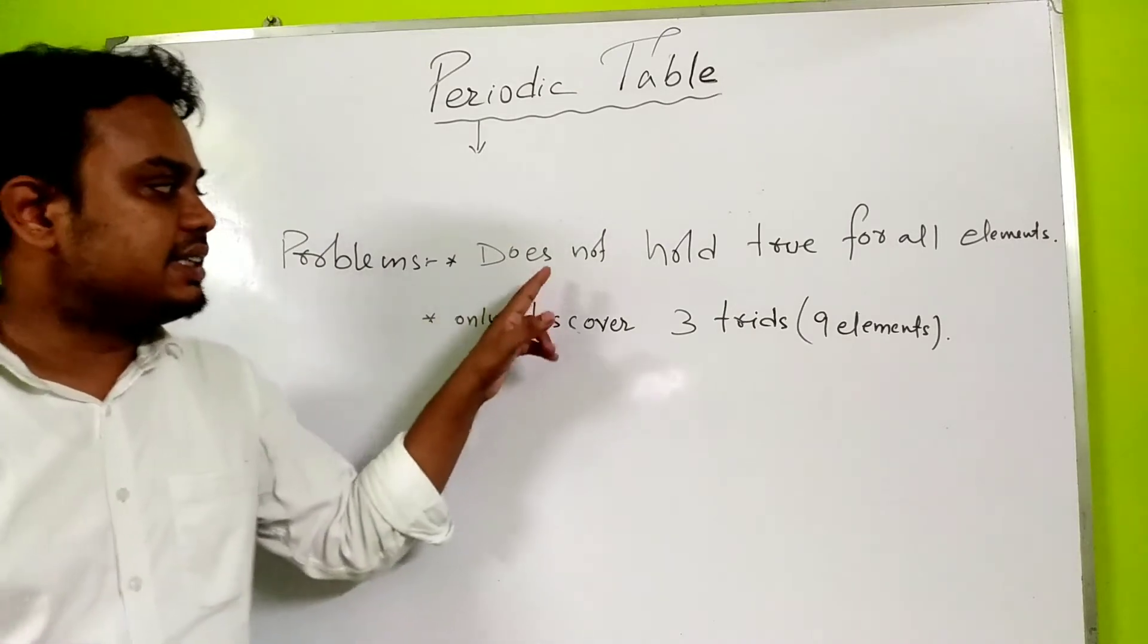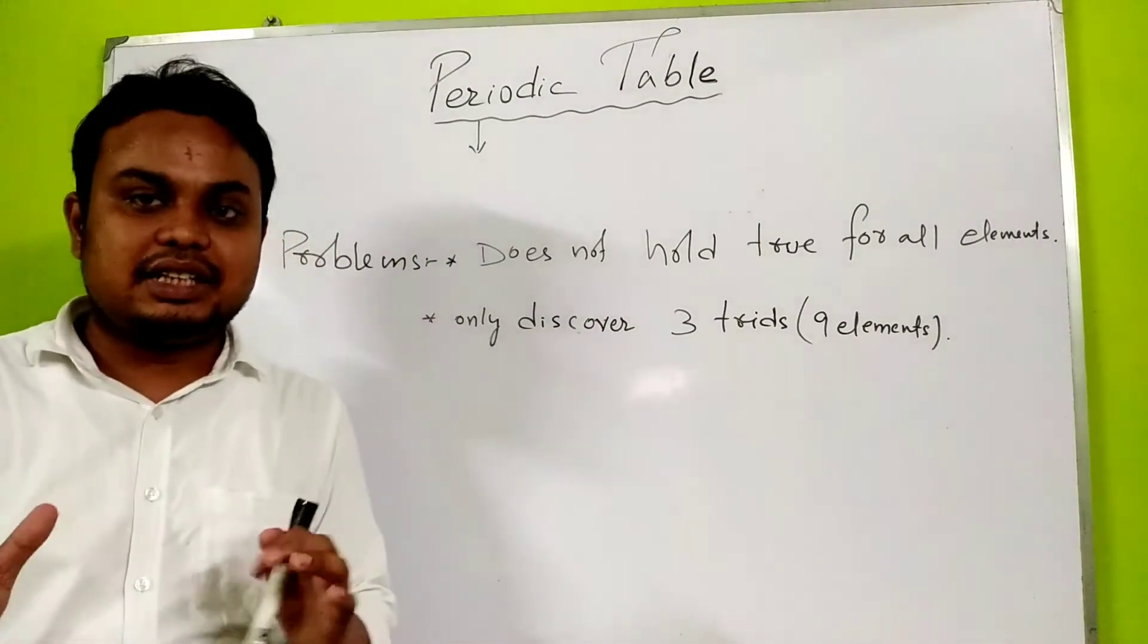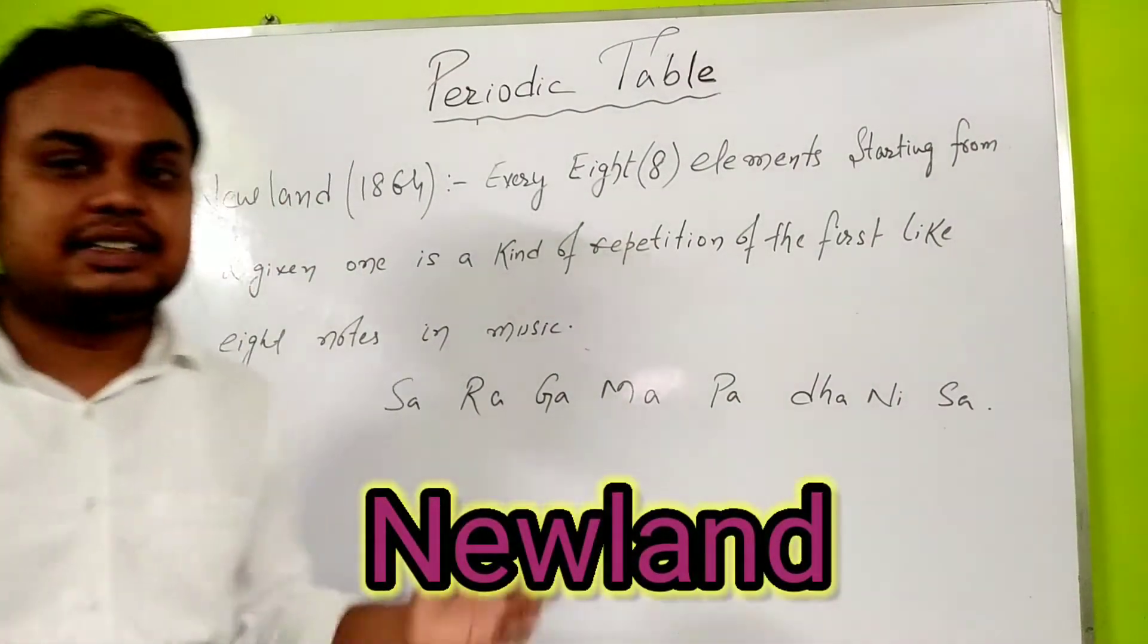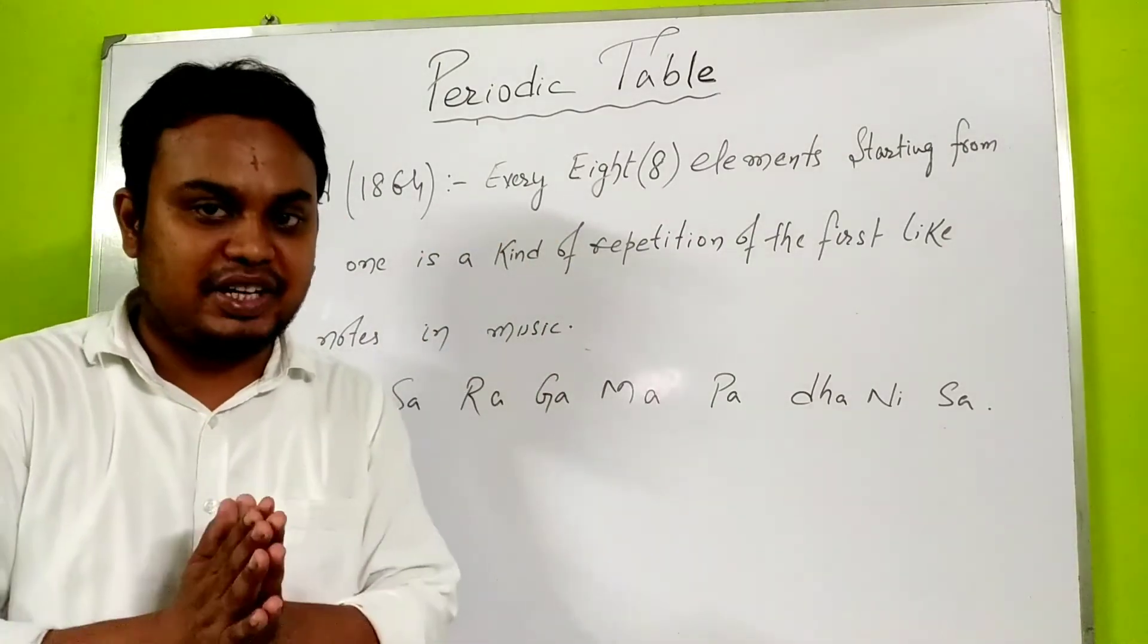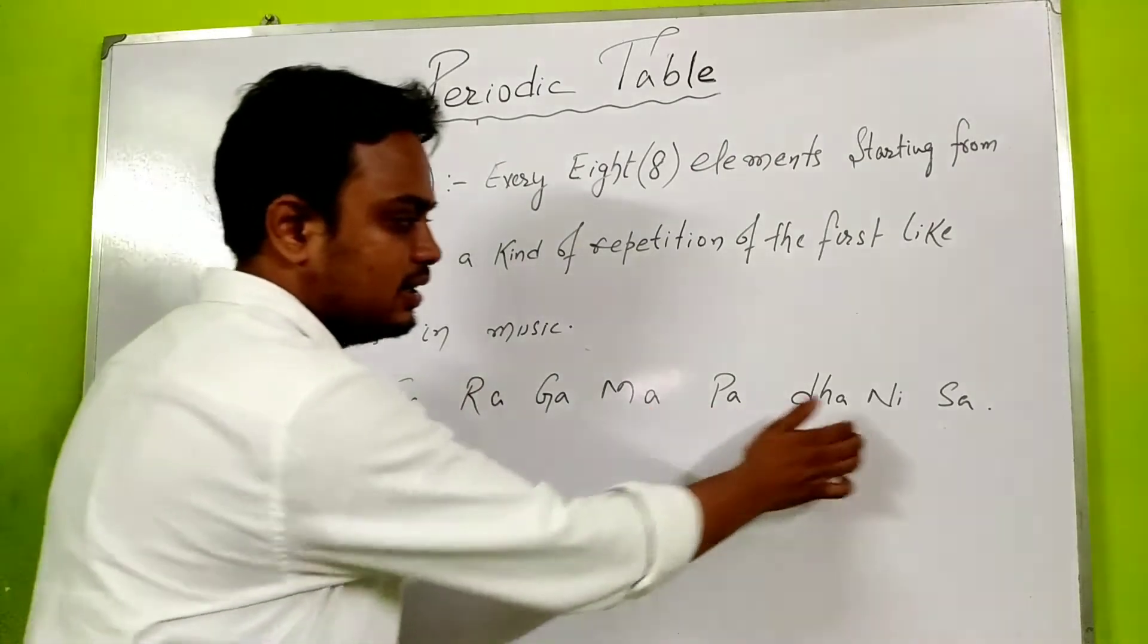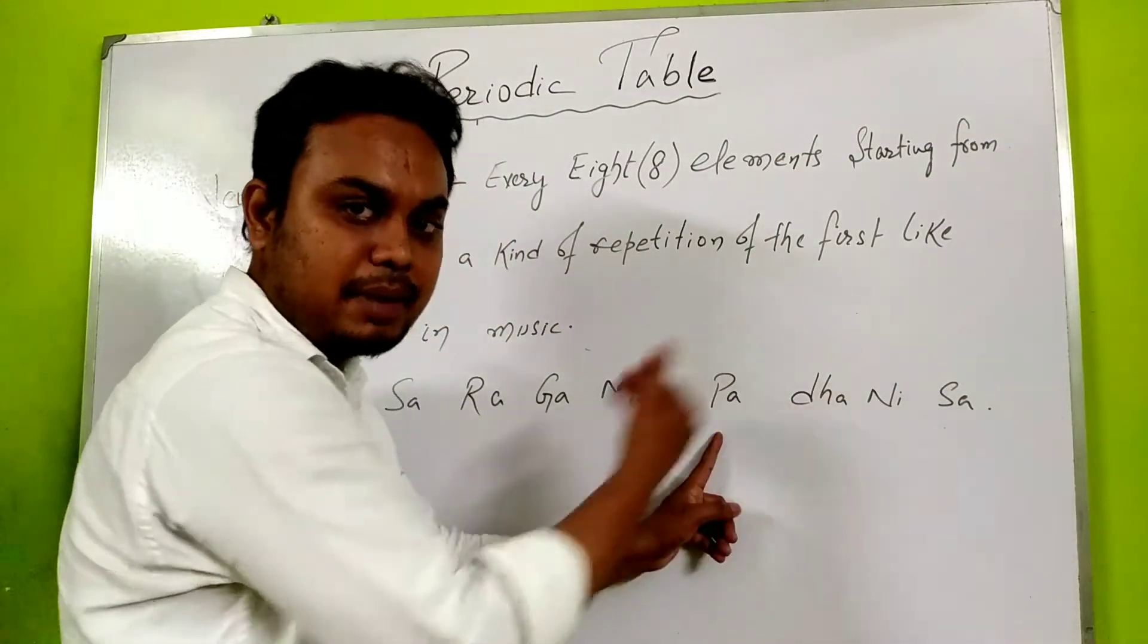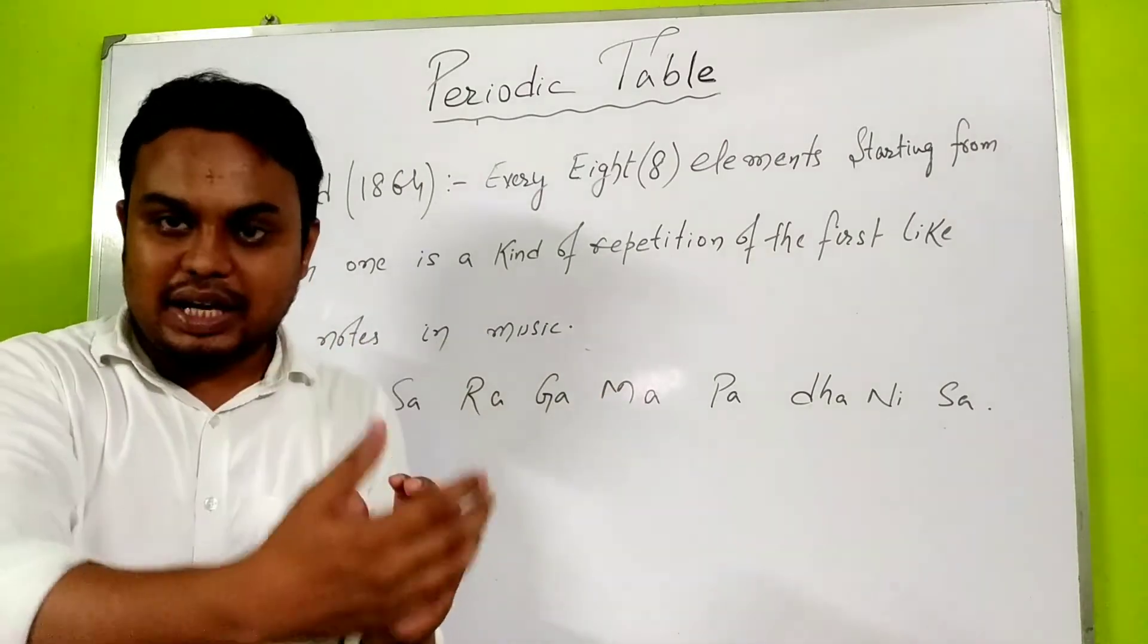Döbereiner only discovered three triads, which means only nine elements. After this came Newlands. Newlands said that if every element is started from a given one, there's a kind of repetition, just like eight tones in music. Every eighth element starting from a given one shows repetition in properties. The eighth element has similar chemical properties to the first element.